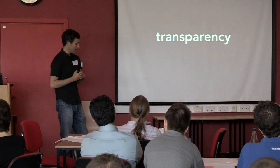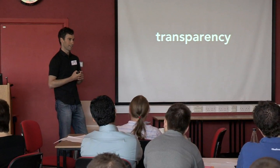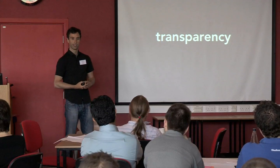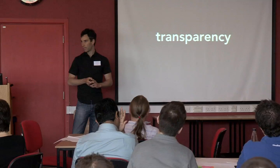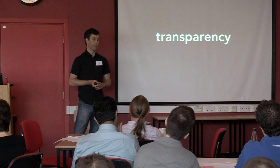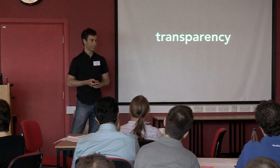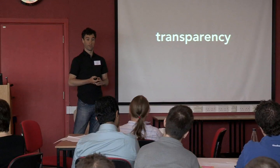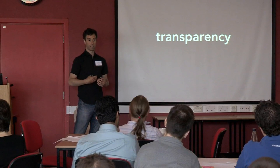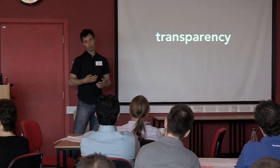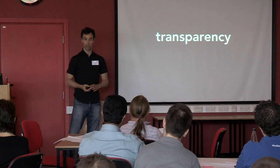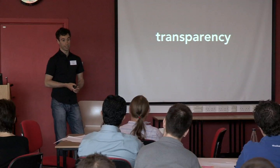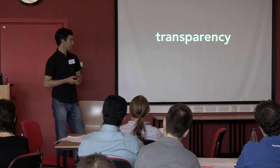Transparency is this idea that you can see what other people are doing and you're aware of their status. Kent Beck talks about individual transparency, which comes from things like test-driven development, where you are exposing your intentions in the code and whether it's working or not by writing tests first. And then there's team transparency, where you are aware of what everyone else on the team is doing.